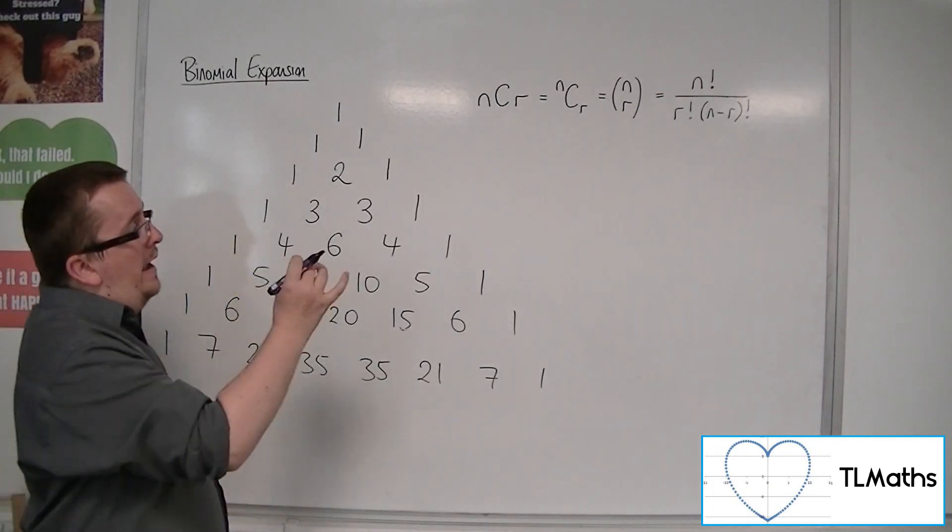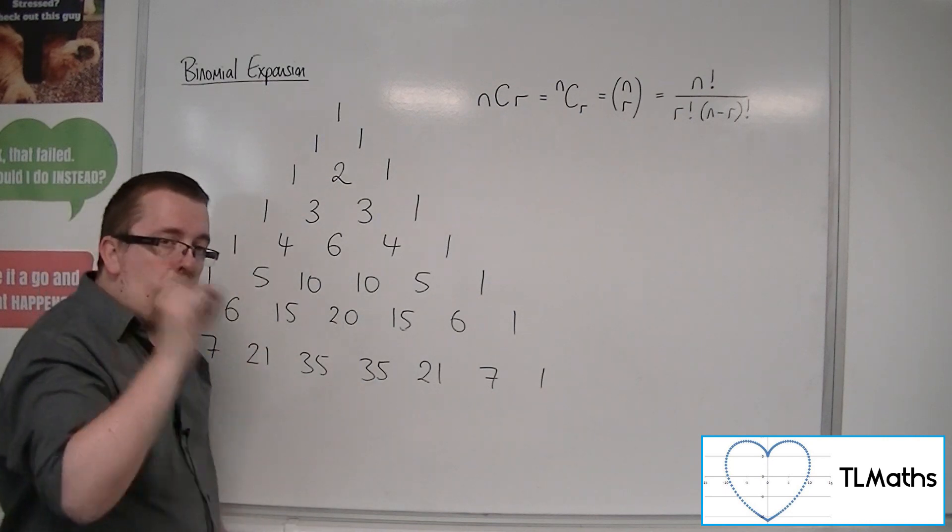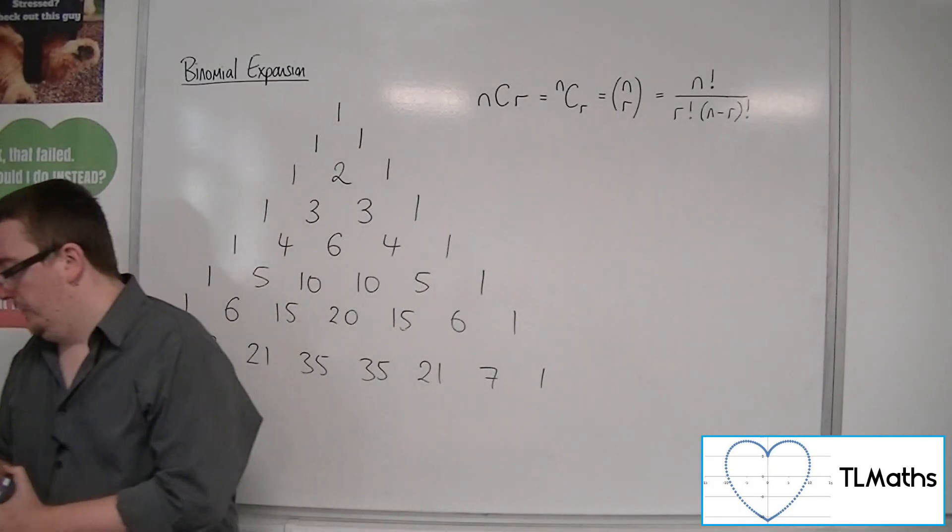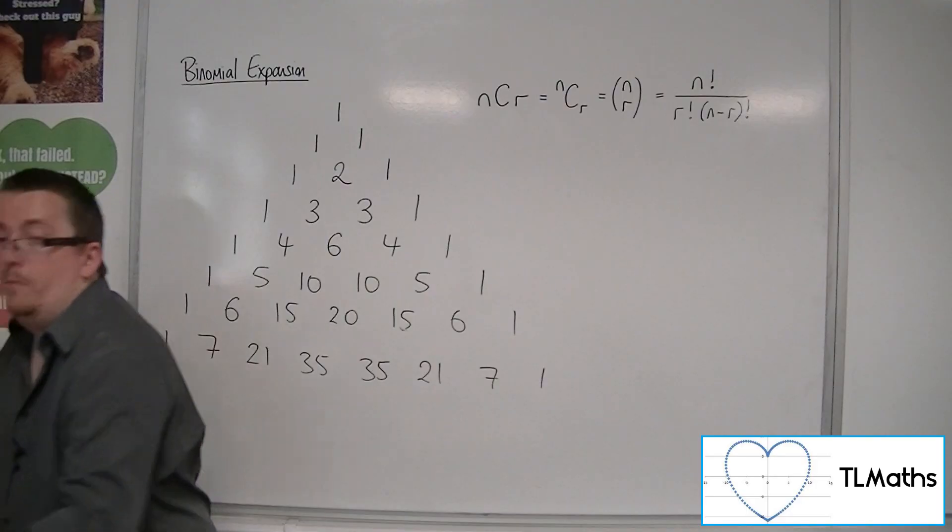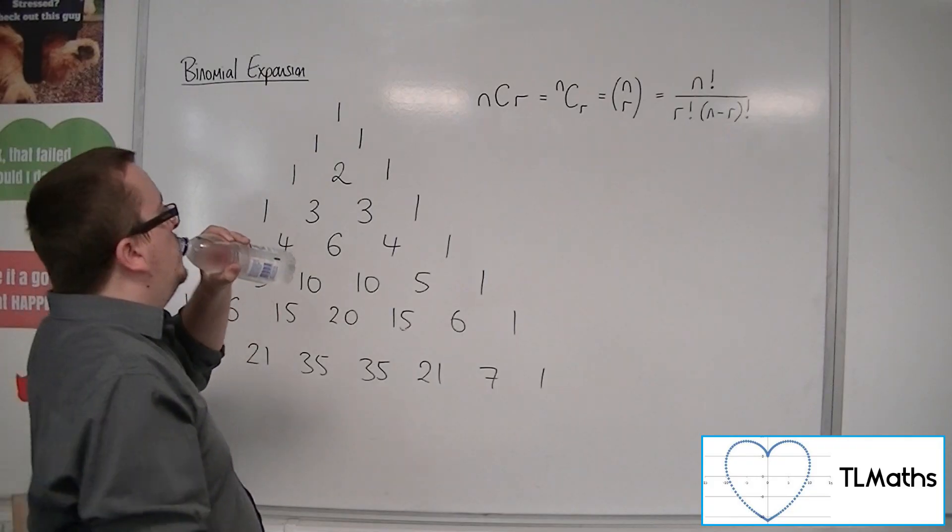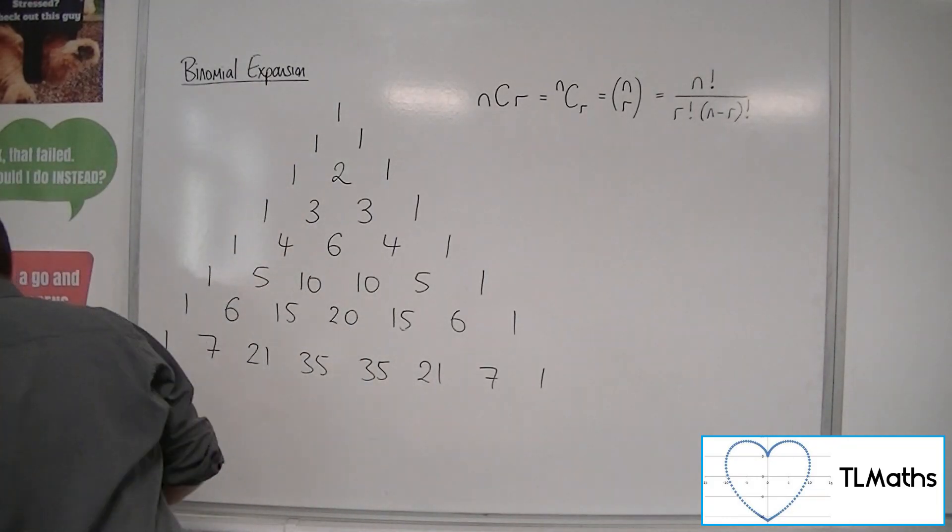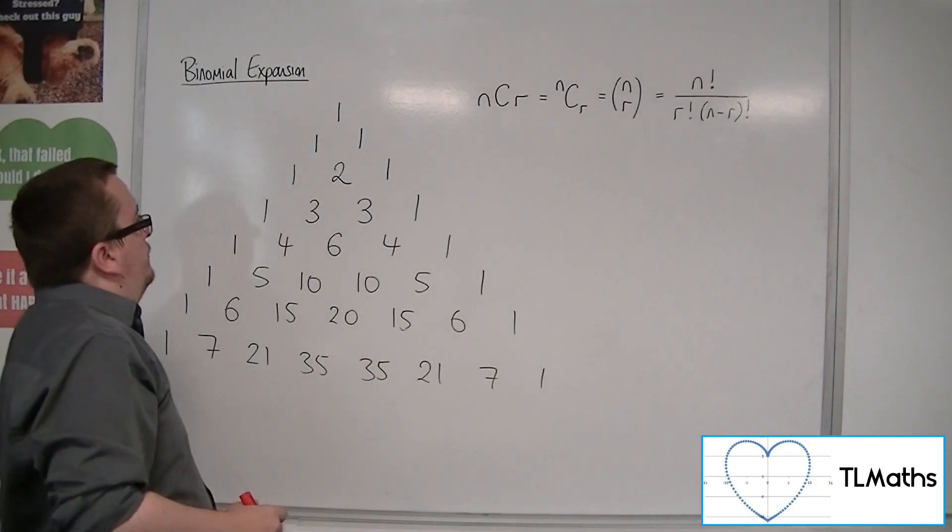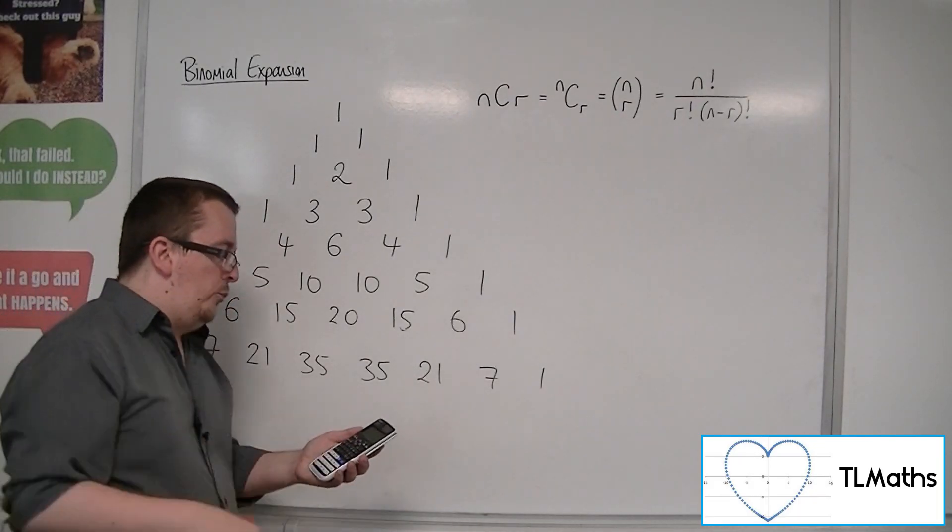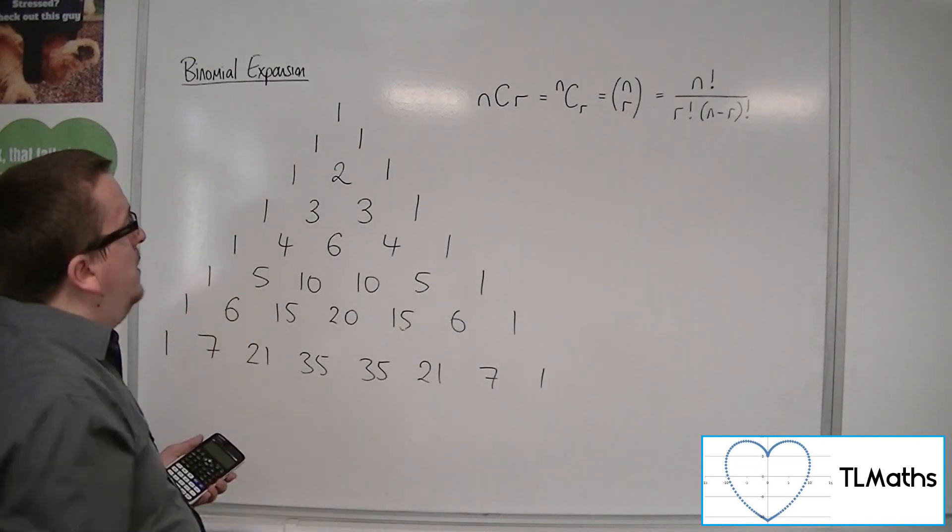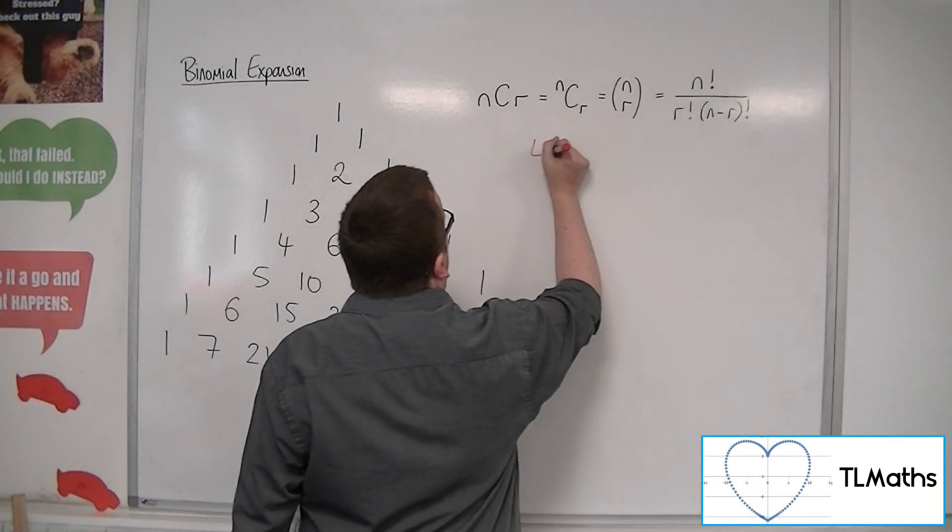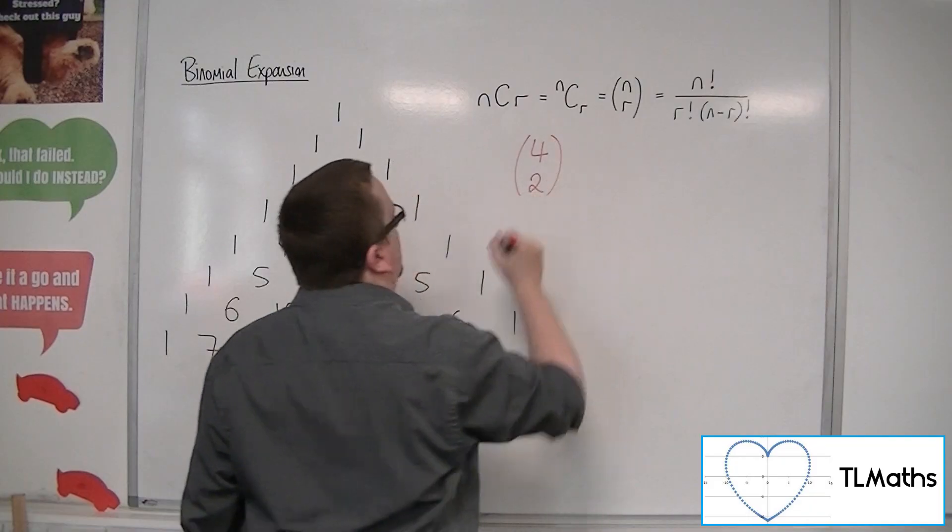This calculates a position within Pascal's triangle. At the moment, I've plucked that from thin air, so it won't seem obvious where it came from. On your calculator, you'll have an NCR button—on the Casio, it's above the division symbol. Let's try 4 NCR 2.